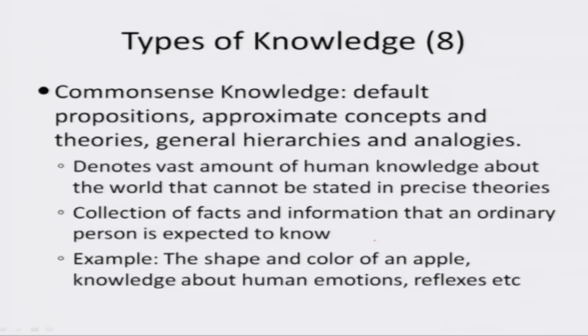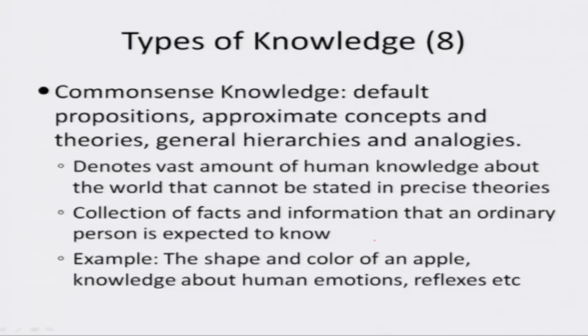Common sense knowledge consists of default propositions, approximate concepts, theories, general hierarchies and analogies. It denotes the vast amount of human knowledge acquired by experience that cannot be stated in precise theories — a collection of facts and information that an ordinary person is expected to know. For example, the shape and colour of an apple, or knowledge about human emotions and reflexes. Whenever you see a person, you can very easily say whether that person is happy, sad or angry. This knowledge about human emotions is deeply ingrained in our minds and hence is common sense knowledge.